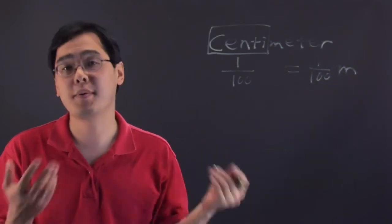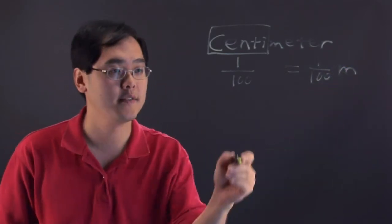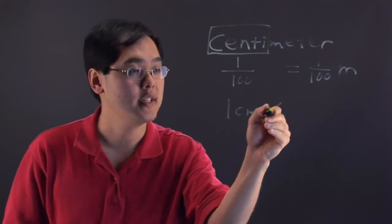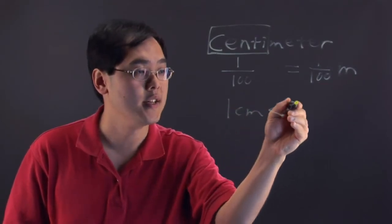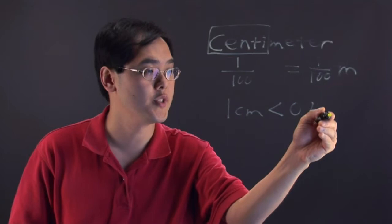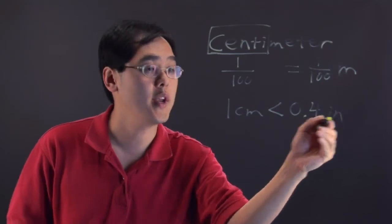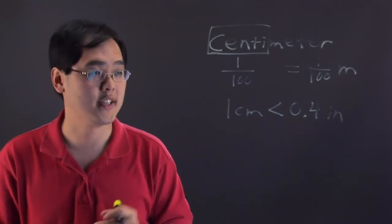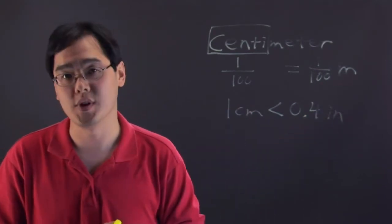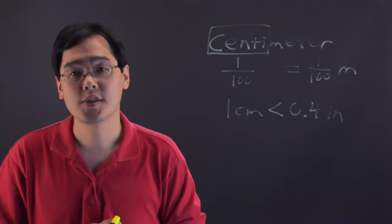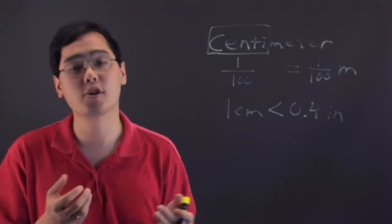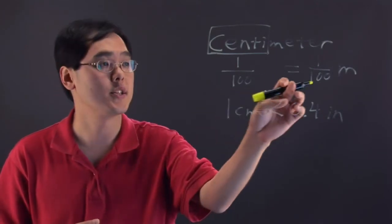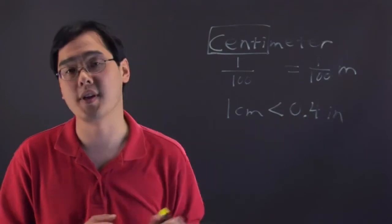To kind of put things in perspective, one centimeter is less than zero point four inches. That's right, one centimeter is not even half an inch. In fact, it's less than four tenths of an inch. So a centimeter is really, really small, but the base of the definition is one hundredth of a meter.